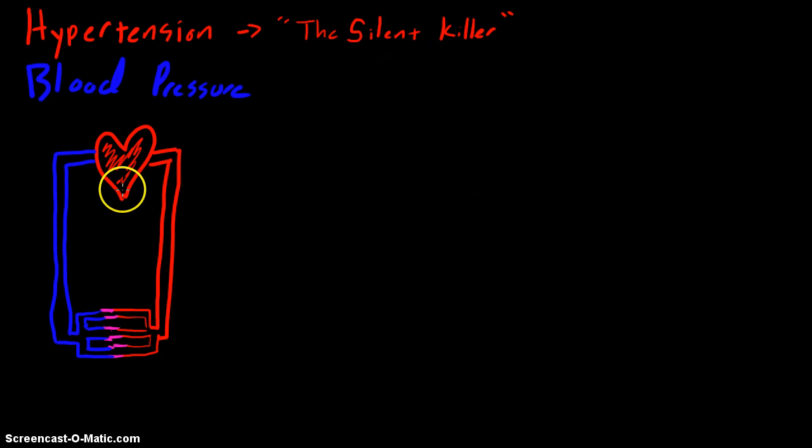If we were to take a cross-section of an artery and look at it end on end, we would see a large muscular tube. Inside is the intravascular fluid. Inside this area is called the lumen, and in the lumen is the intravascular fluid.